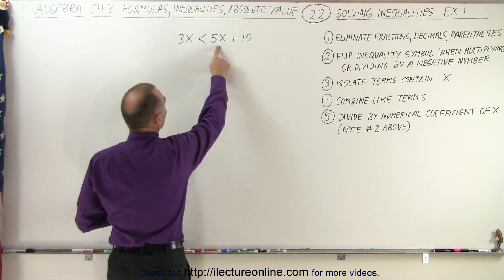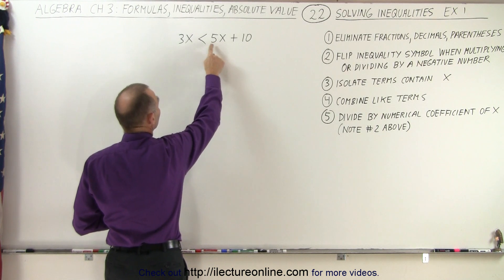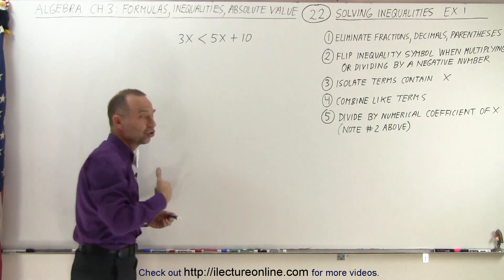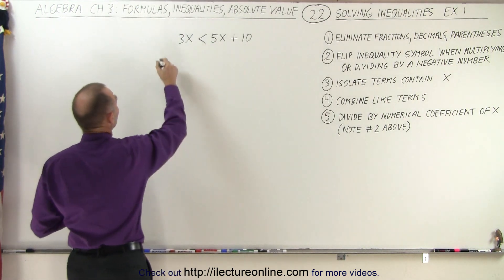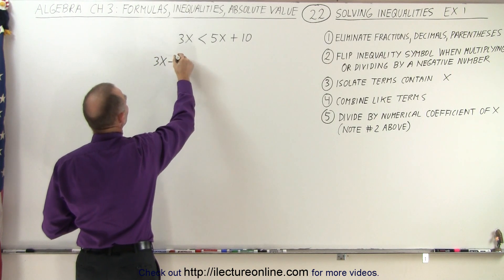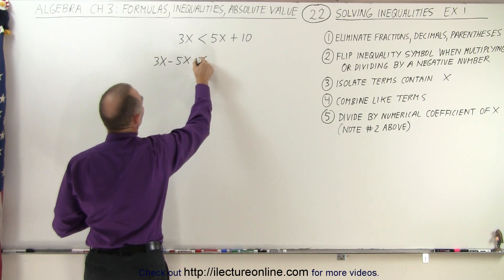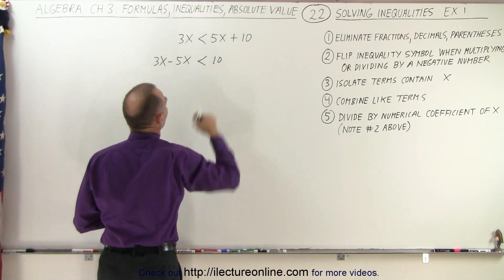And just like with equations, when we move the 5x across the inequality sign, we're going to change the sign of that. So this becomes 3x minus 5x is less than what's remaining on the right side, the number 10.